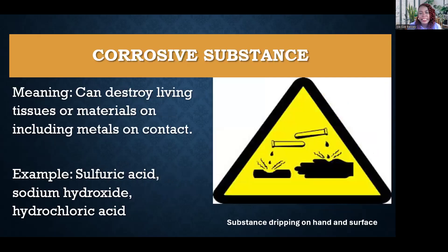The next substance we're going to look at is corrosive substances. You can see it's a triangle with a substance dripping on somebody's hand or on a surface, and this means that the substance can destroy living tissues or materials, including metals, on contact. Examples include dangerous fluids like sulfuric acid, sodium hydroxide, and hydrochloric acid.